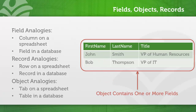An object is everything on that tab — so all of the fields, all of the records. And if you've worked with databases in the past, an object is essentially a table.